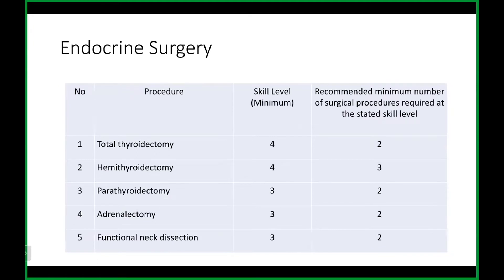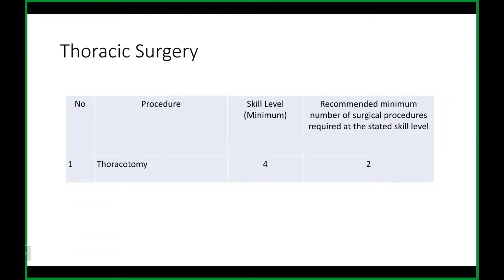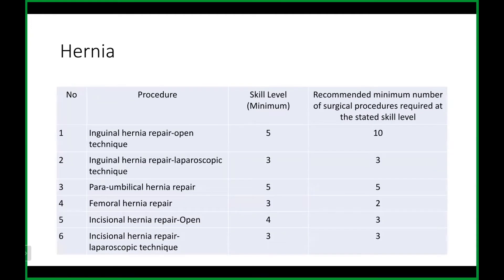For endocrine surgery, total thyroidectomies and hemithyroidectomies should be at supervised levels. Adrenalectomies — we look at the center; we understand if numbers are not very high. For thoracic surgery, you should be doing lobectomy; if not, that's excusable. For hernias, laparoscopic hernia repair — assisting at most is acceptable. Open hernias, there's no excuse for not doing them. Femoral hernias are not very common; one or two is acceptable. Incisional hernia open repair — you need at least one or two, though preferred minimum is three.